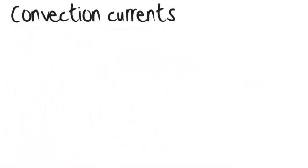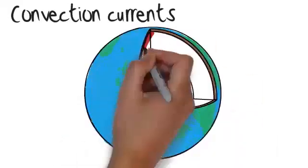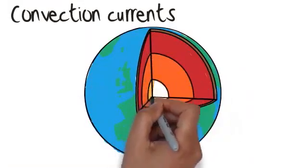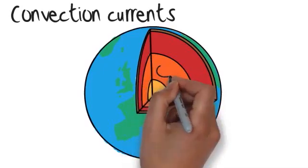The motion of the tectonic plates is caused by convection currents. These are caused by radioactive decay in the core of the Earth and result in hot currents rising and cold currents falling.